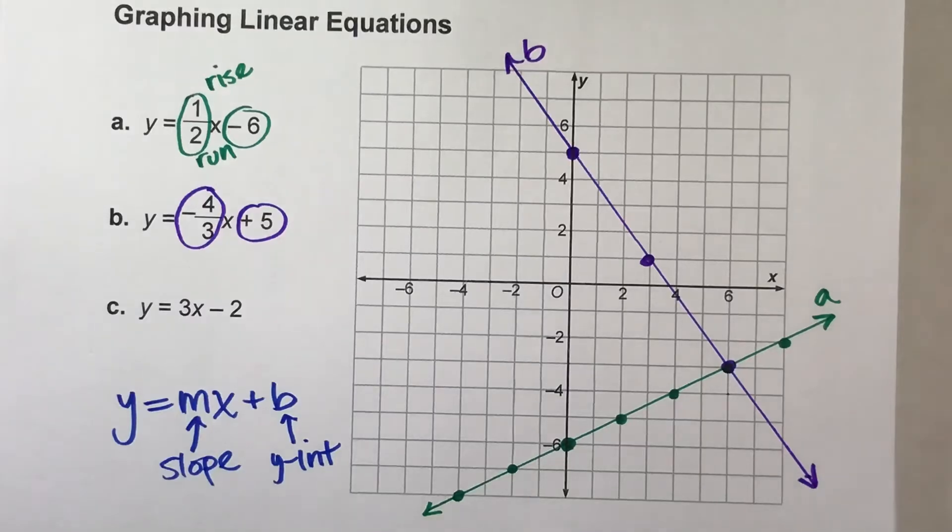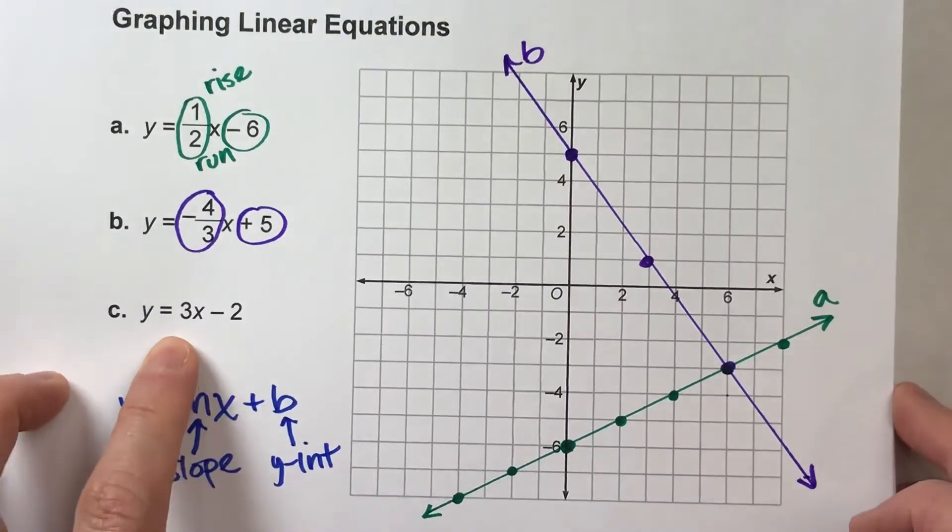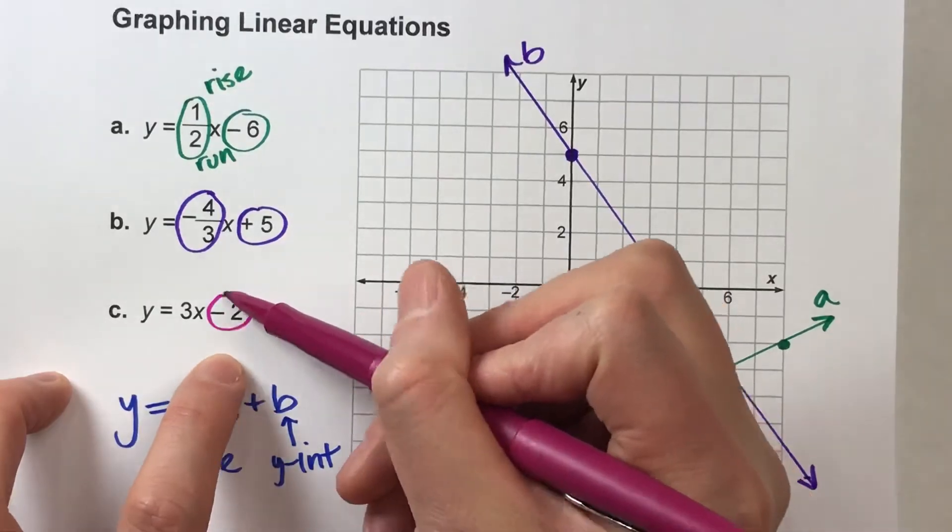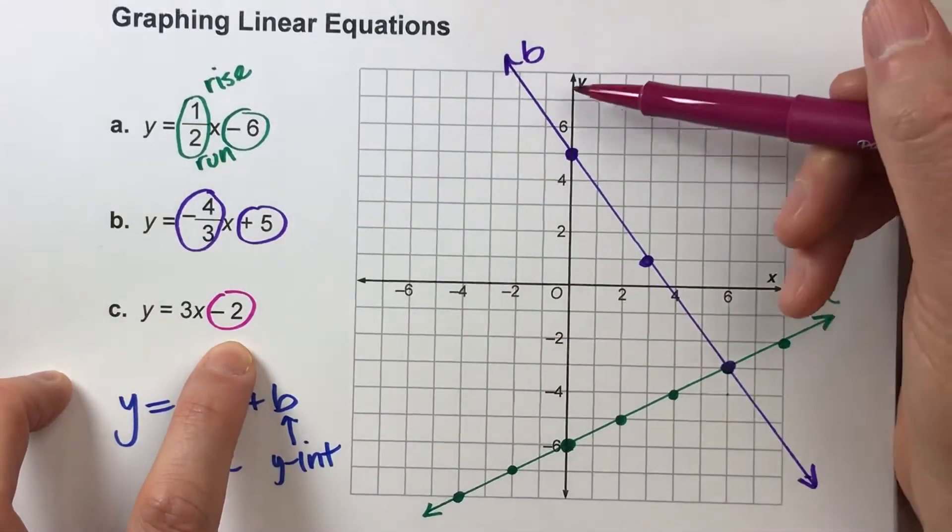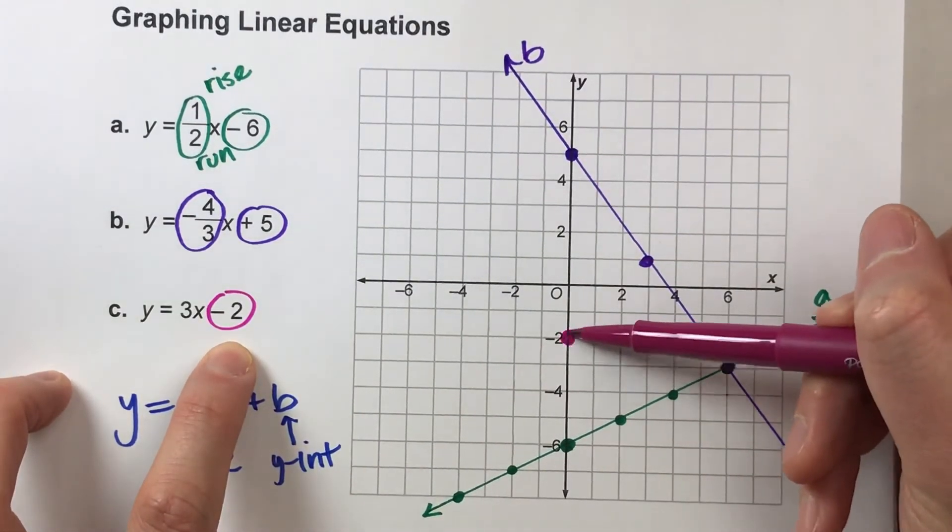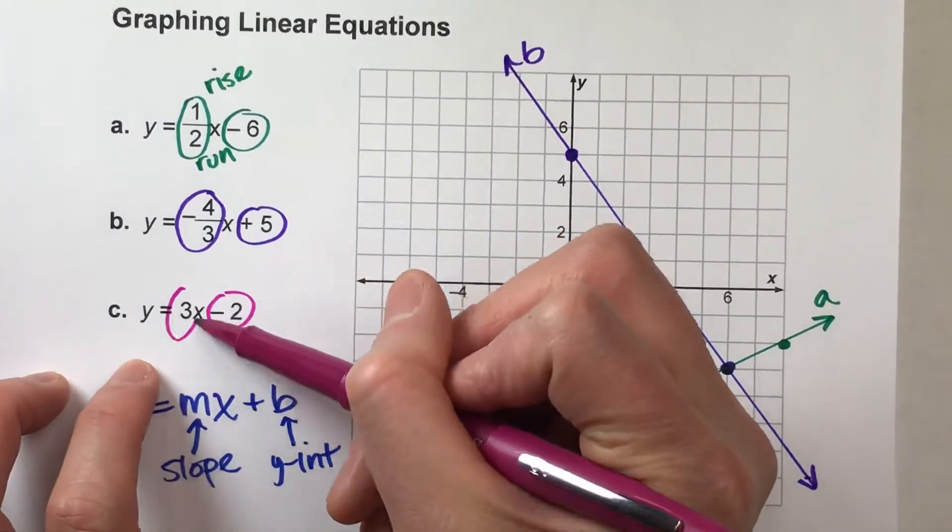Now, for the last one, we've got Y equals 3X minus 2. Here's my Y-intercept, negative 2. So on the Y-axis, I'm going to plot a point at negative 2. Now, my slope here is 3.